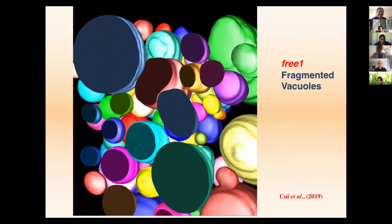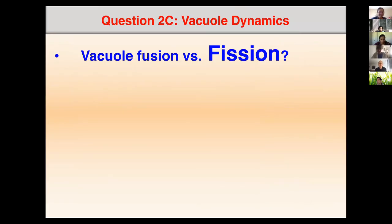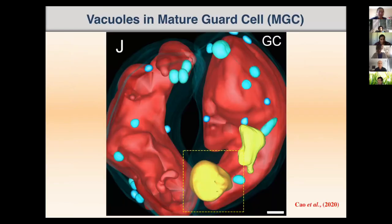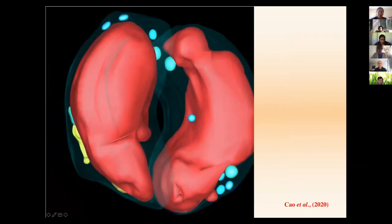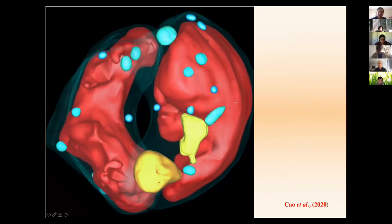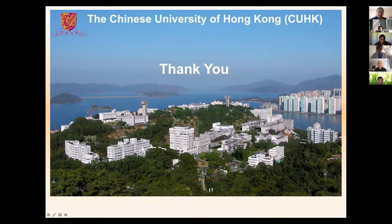The last question: we know vacuole fusion happens, but what about fission? How does vacuole fragmentation occur? One example we are studying is the mature guard cell using 3D tomography — when the stomata opens, you see large vacuoles; the vacuole then fragments into smaller pieces. We used ABA treatment to control stomata opening and closing, and you can see the vacuoles change from big to small. With that, thank you very much for the opportunity.